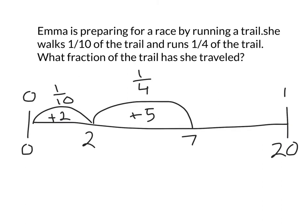This is all the math we have to do. Our answer to what fraction of the trail she has traveled would be seven-twentieths, because she's gone seven out of the twenty possible kilometers. We're going to write that up. Seven-twentieths is our answer.